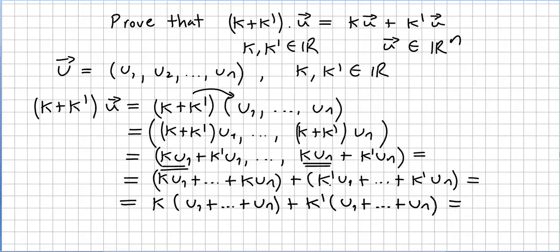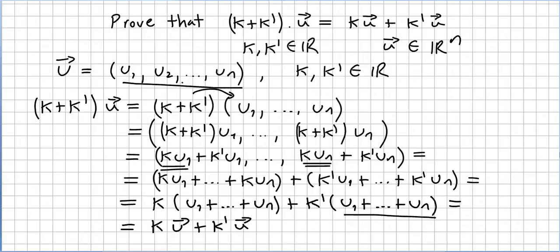We can factor: k'·u1 + k'·u2 + ... + k'·un gives k' times (u1 + u2 + ... + un), which is k'·u. Similarly the k terms give k·u. So this is the same as k·u + k'·u, which concludes the proof — we just proved that (k + k')·u equals k·u + k'·u, as we were asked to prove.